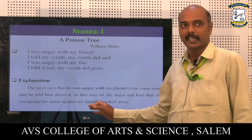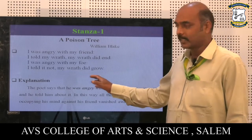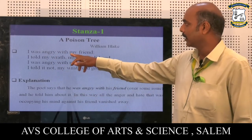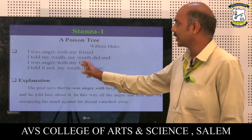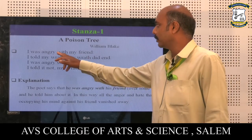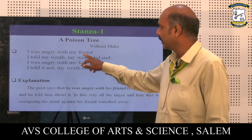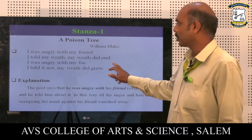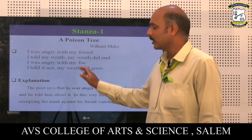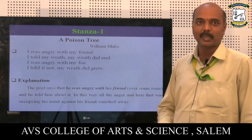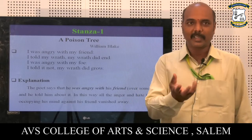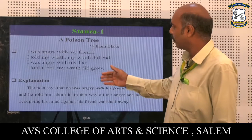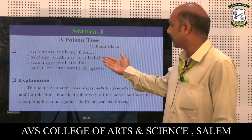This is the first stanza. The speaker uses the first person singular 'I' at the beginning of each line. The lines read: 'I was angry with my friend, I told my wrath, my wrath did end.' The poet says the narrator was angry with his friend, but was able to share his feeling. He communicated his anger, and when he shared what he felt, the wrath came to an end.